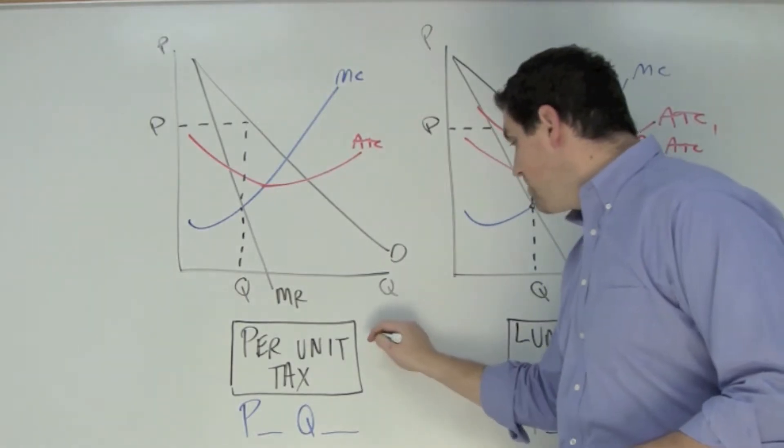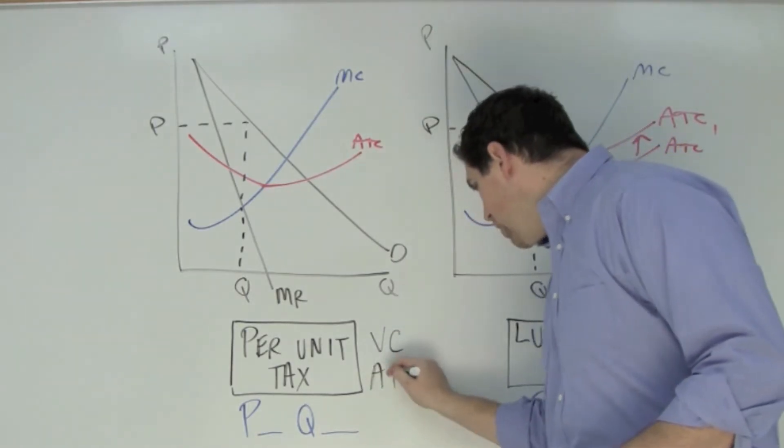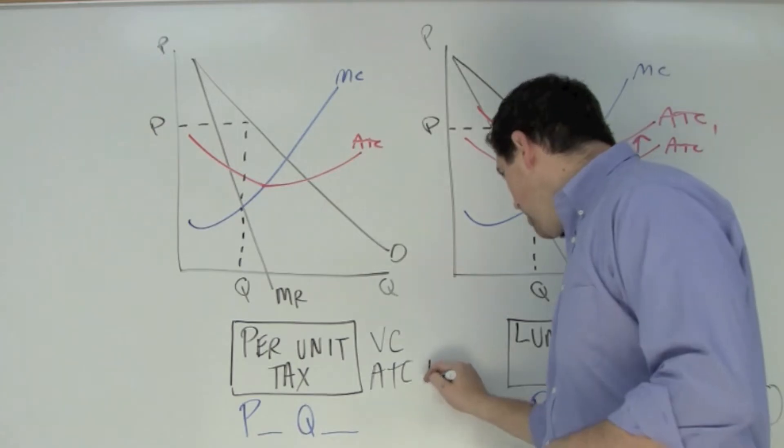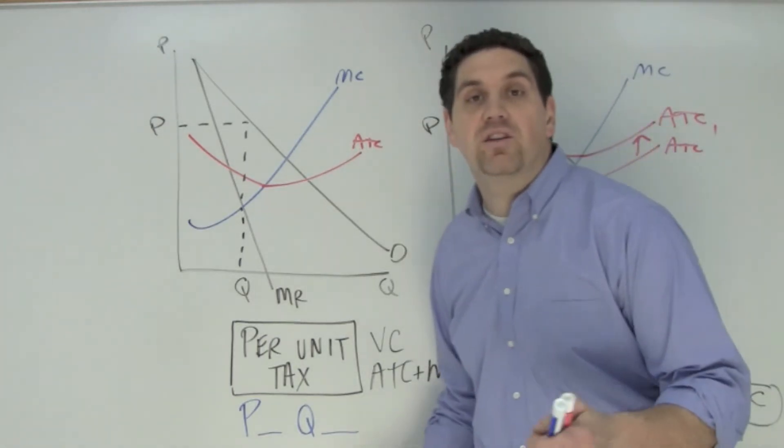This kind of tax will affect the firm's variable cost, which will change the average total cost and the marginal cost. The marginal cost changes, so is the price and quantity.